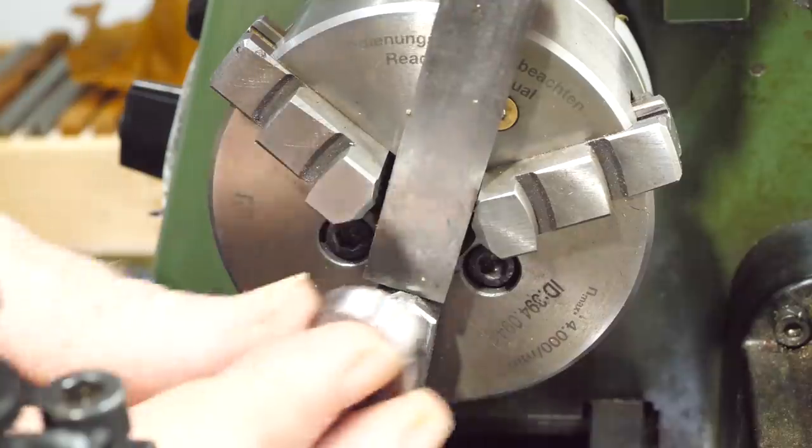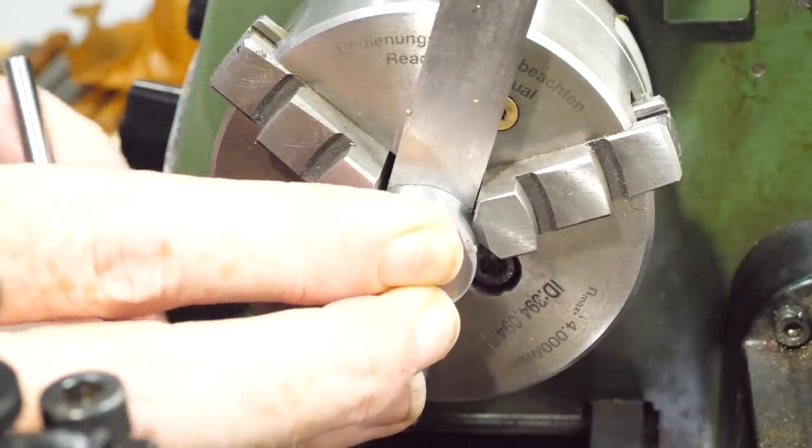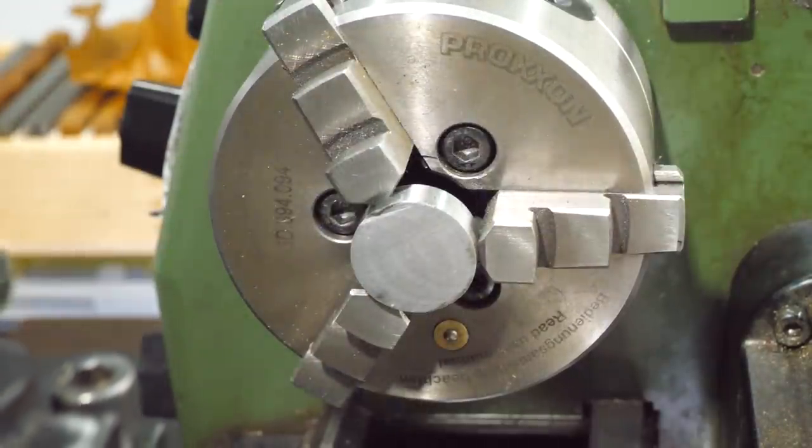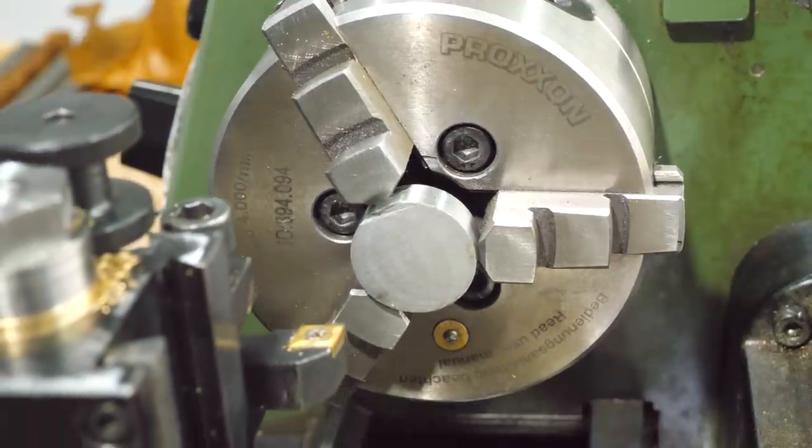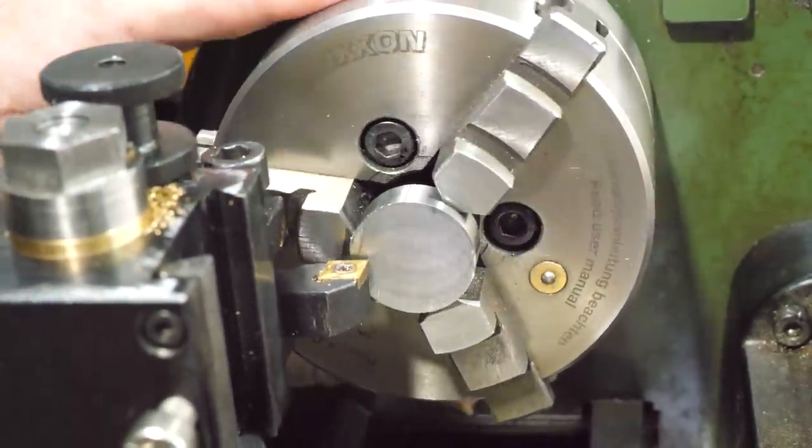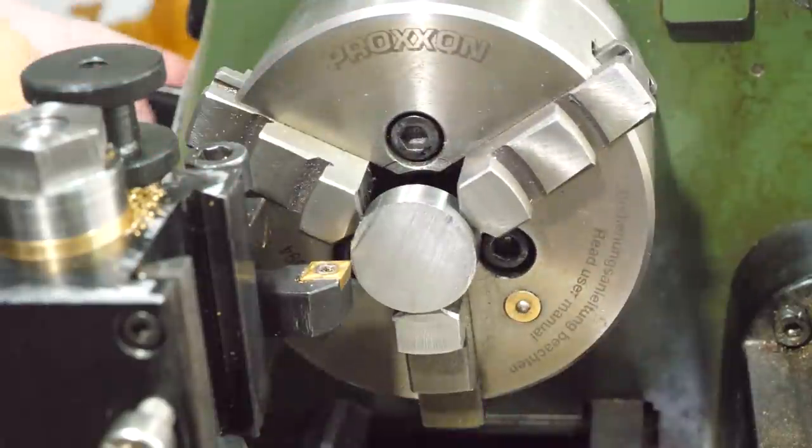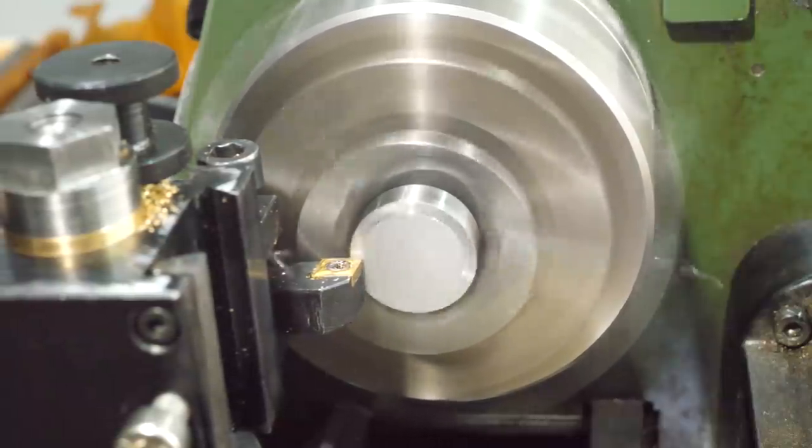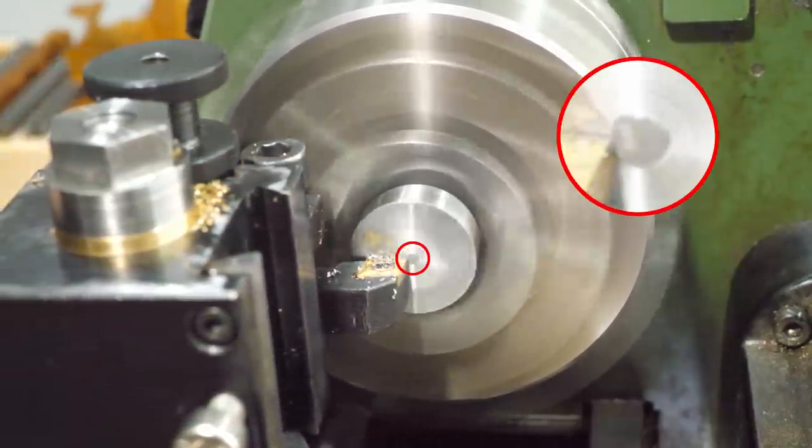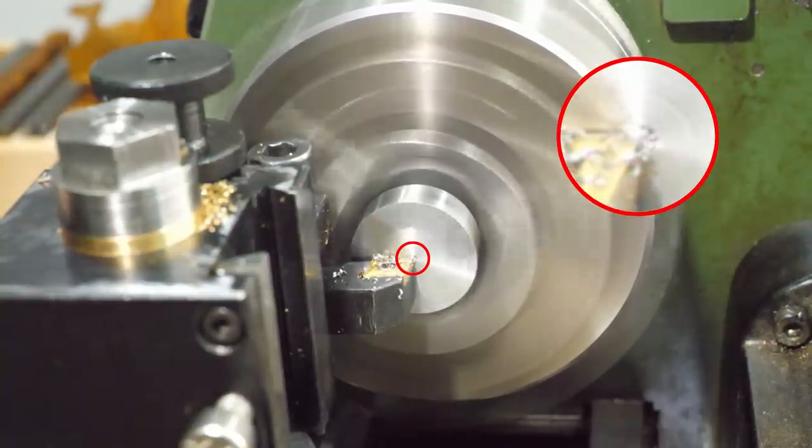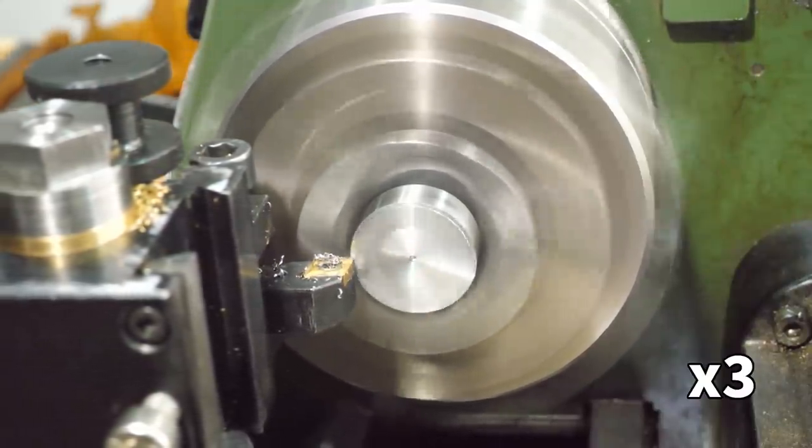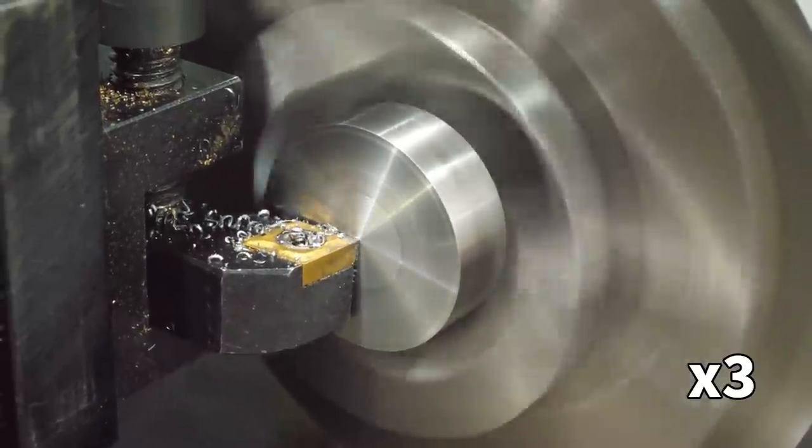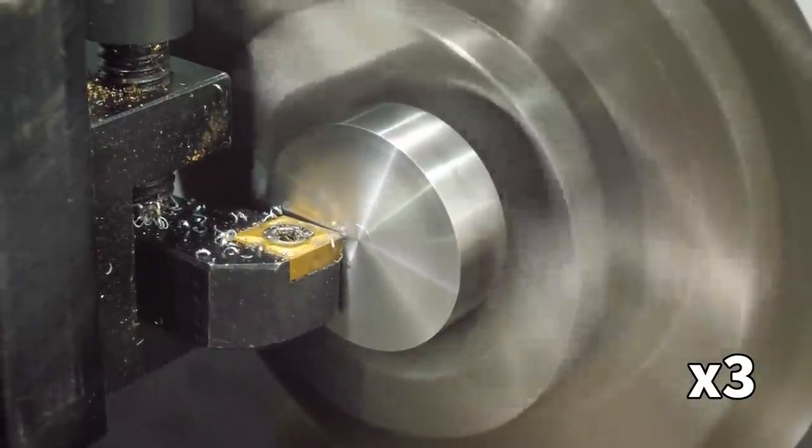To face the stock flat I used a parallel behind the work to get it reasonably square. The stock is already about the right size, and the thickness isn't critical, so all I have to do is face the two sides roughly parallel and knock off the corners. This would have gone a lot better if I didn't have the tool way too high.